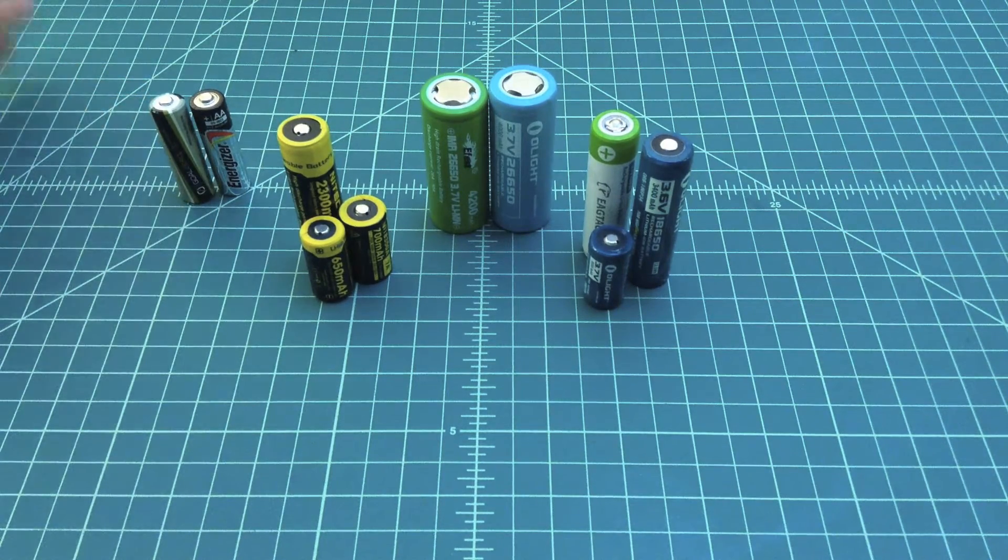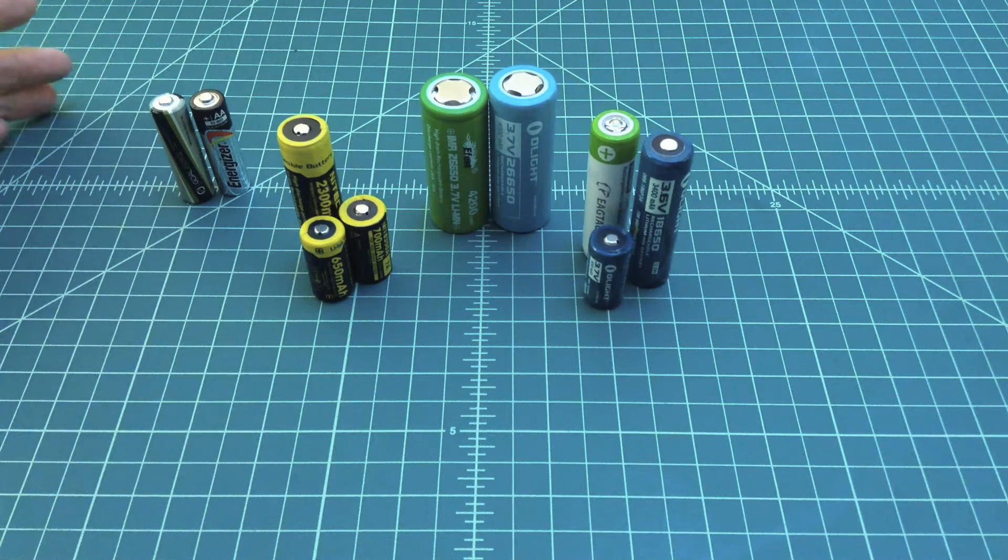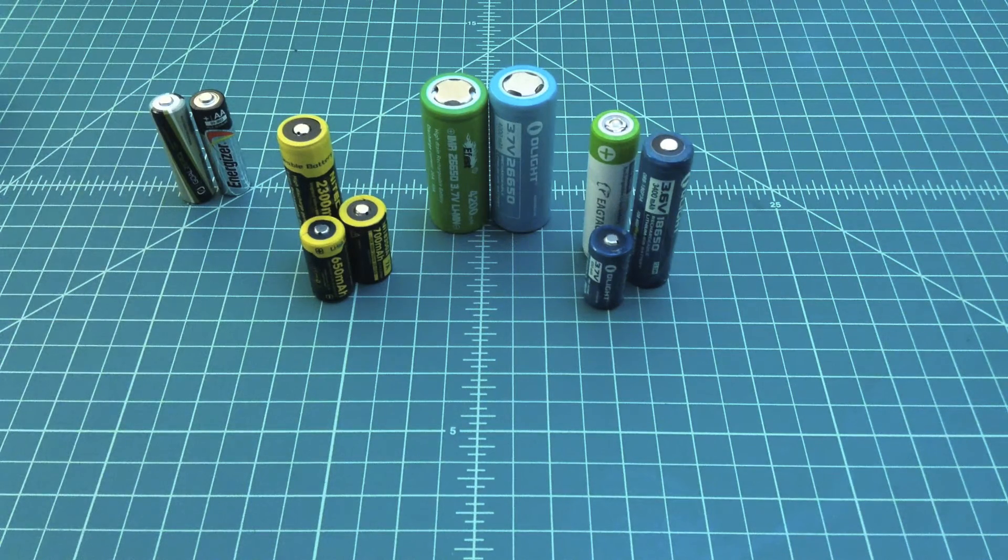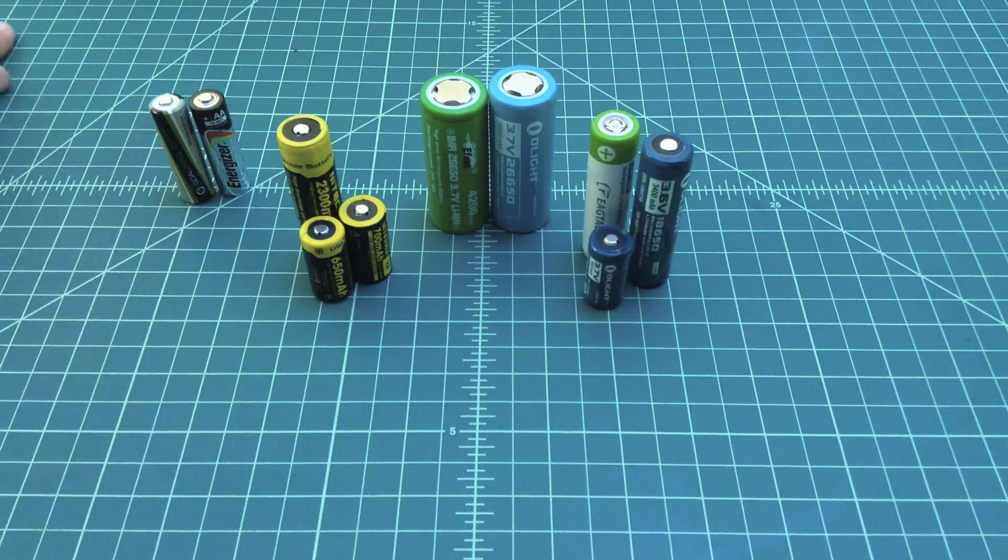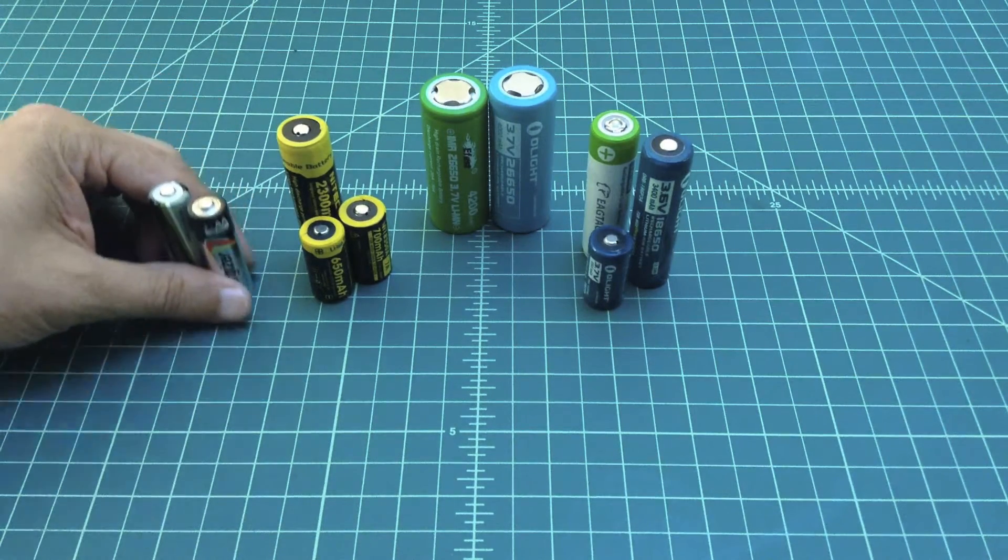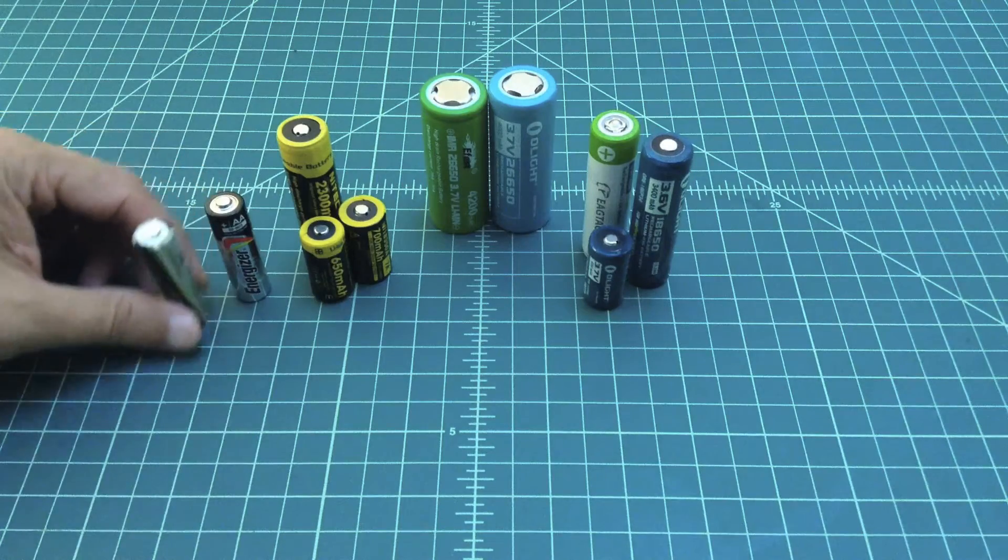We're also going to talk about amps, which are how fast a battery can—I don't know if dissipate is the right word—but it can produce energy.